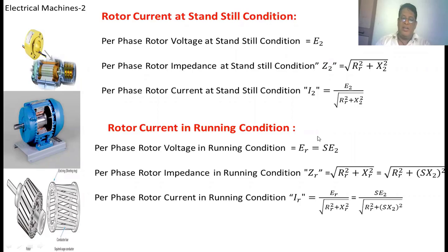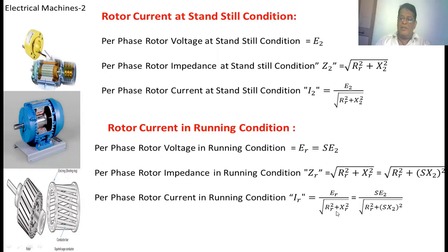Now we calculate the rotor current in a running condition. The per phase rotor voltage in running condition Er equals S times E2. The per phase rotor impedance in running condition Zr equals the square root of Rr squared plus Xr squared, where Xr equals S times X2. Substituting, Zr equals the square root of Rr squared plus (S times X2) squared. The per phase rotor current in running condition IR equals Er divided by the square root of Rr squared plus Xr squared, which equals S times E2 divided by the square root of Rr squared plus (S times X2) squared.